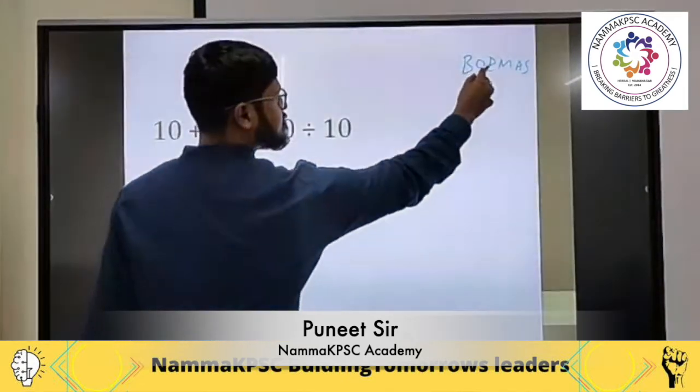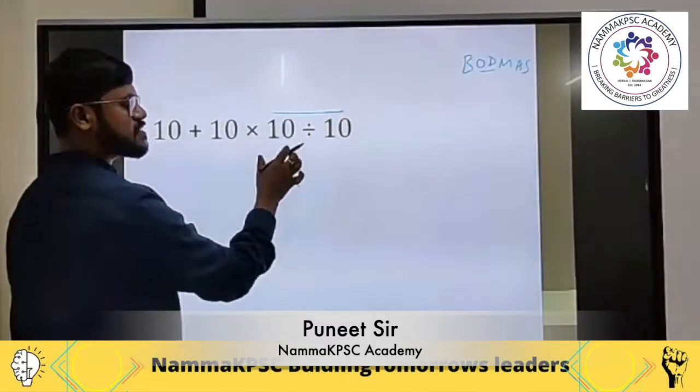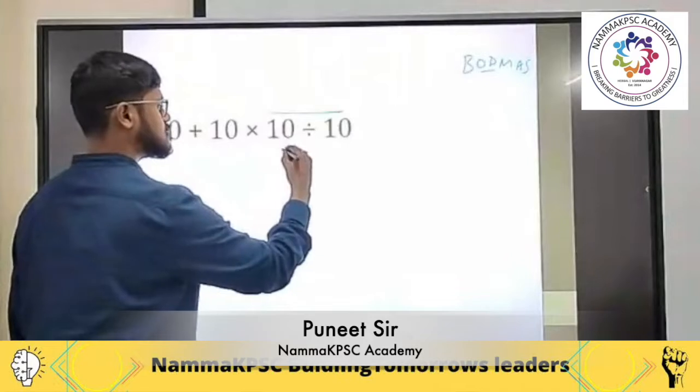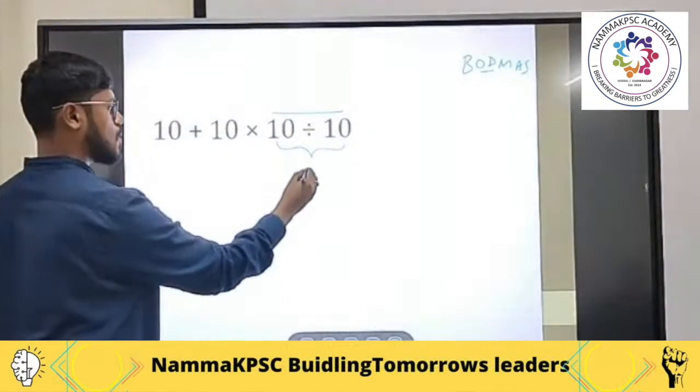Then what else is there? Next, division. If any division is there here, this particular digit is your division. Let us solve this particular. 10 divided by 10, what do you get? 1.